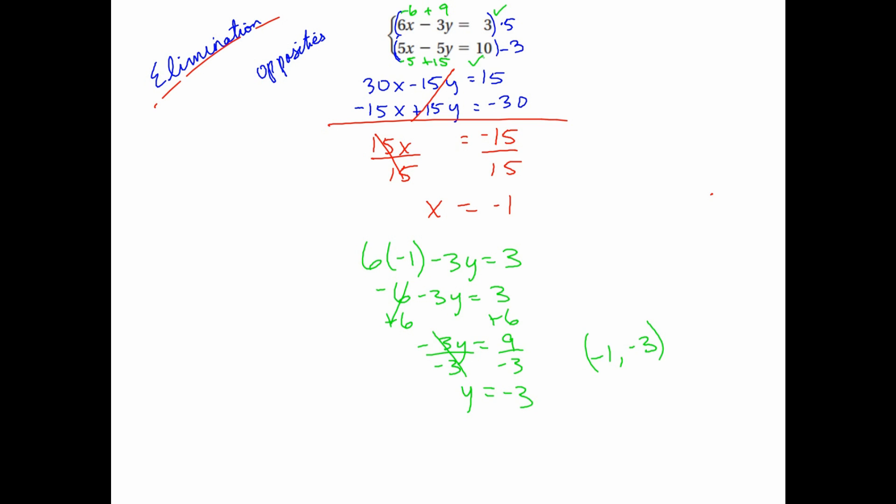So that's how you use elimination. Remember, you can multiply both equations by a number to get opposites, you can multiply just one of them if that's all that's necessary, or you may not even need to multiply — it could already be set up for you.